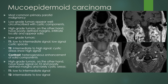Mucoepidermoid carcinoma is the most common primary parotid malignancy. Low-grade tumors appear well-circumscribed with cystic components, so there is overlap with the imaging features of benign salivary gland lesions. However, higher-grade lesions have poorly defined margins, infiltrate locally, and appear solid. Low-grade tumors on T1 tend to be low to intermediate in signal; cystic areas are low on T1 but hyperintense on T2, with heterogeneous enhancement of the solid components. Higher-grade tumors are lower signal on T2, have poorly defined margins, and rarely show cystic areas. Here you can see a mucoepidermoid carcinoma infiltrating the gland — low signal on T2, intermediate to low on T1, with irregular infiltrative enhancement.